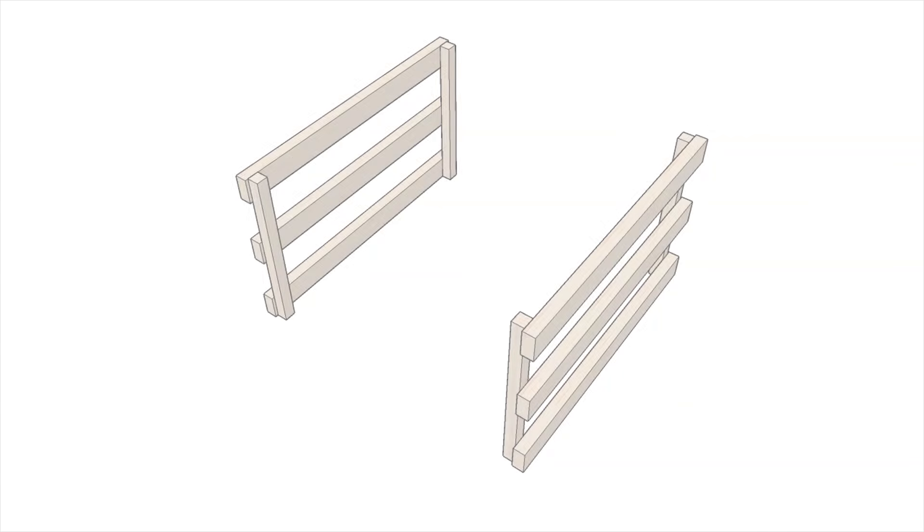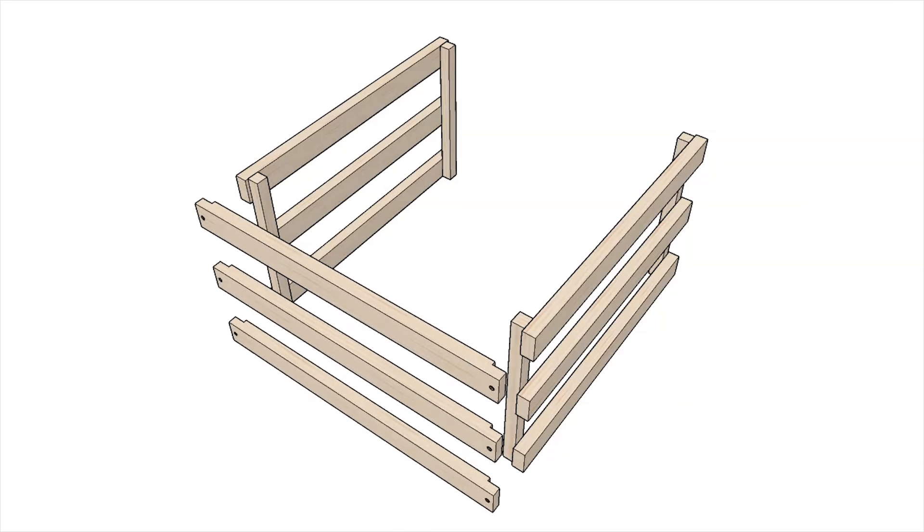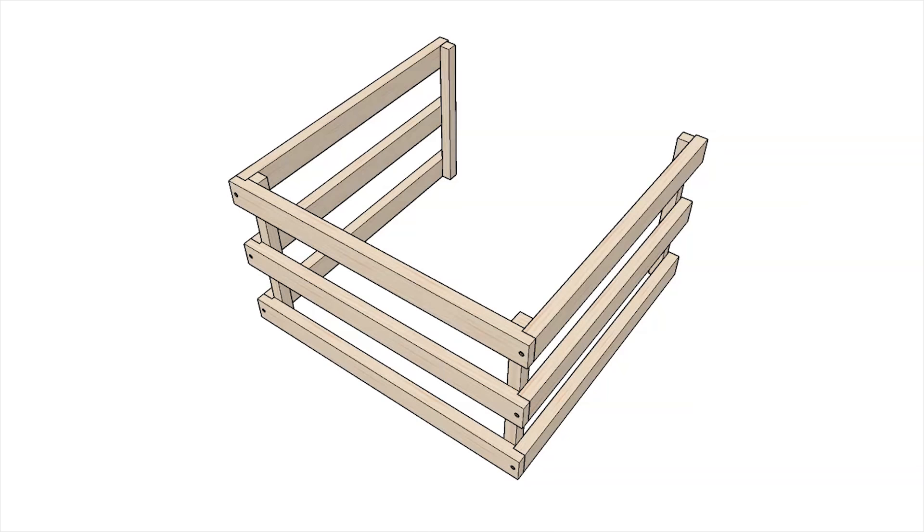To start, arrange the side ladders on the floor or a table. Attach three connectors to the bottom of each side ladder using the provided wood screws.